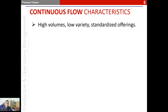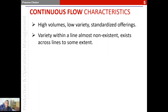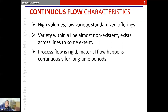The characteristics of continuous flow are very high volumes, long time uninterrupted flows, very low variety, and a highly standardized offering. The variety within a line is almost non-existent — hardly ever will the line be used for a different item. Across different lines in the same factory there might be some variety, but the process flow is rigid.